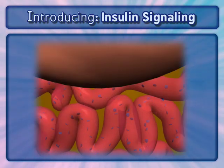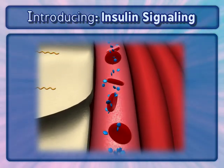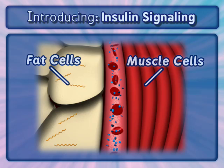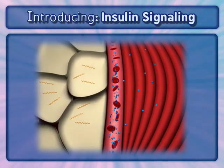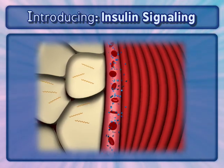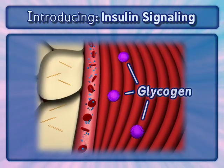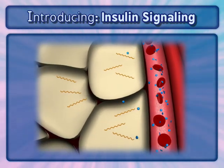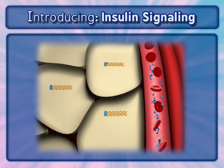Following the digestion of food, higher levels of glucose circulate through the bloodstream, where it enters different cell types. In muscle cells, glucose is readily used to produce energy and is also stored as glycogen, a secondary short-term energy source. In fat cells, glucose is used for triglyceride production and acts as an important energy reserve molecule.